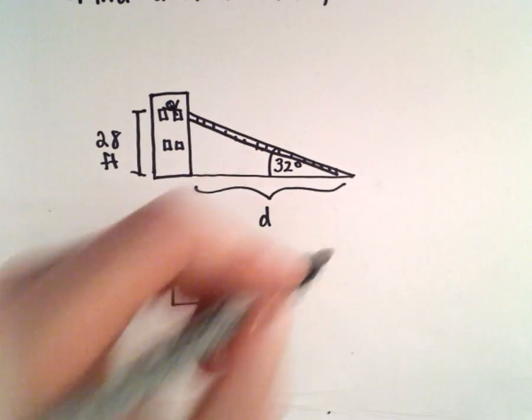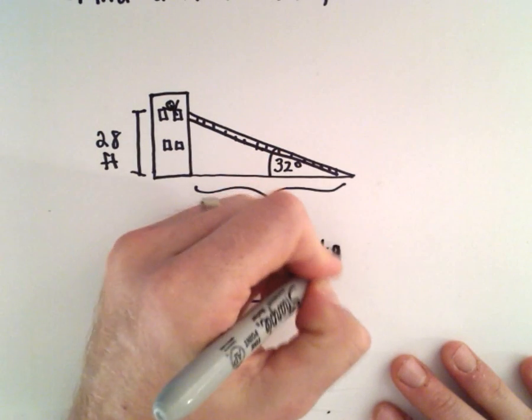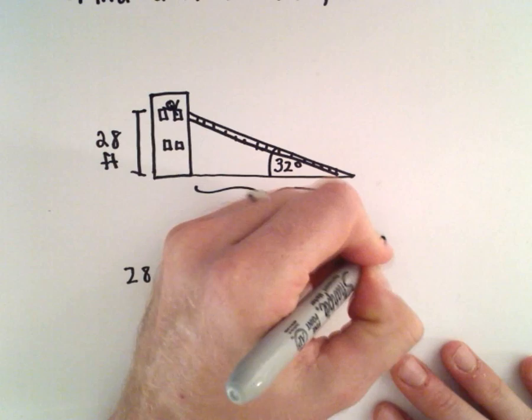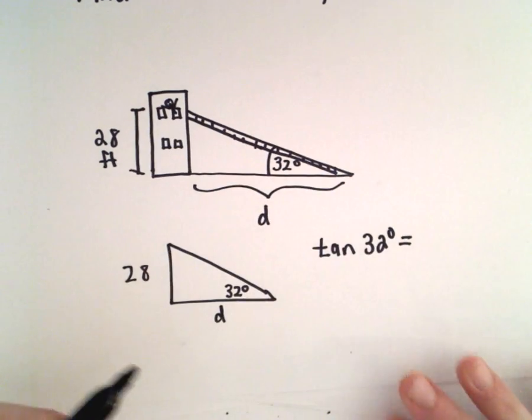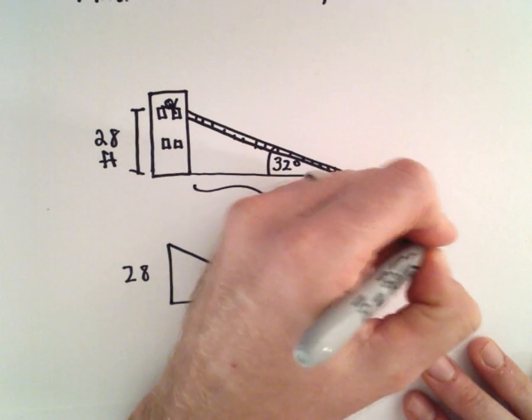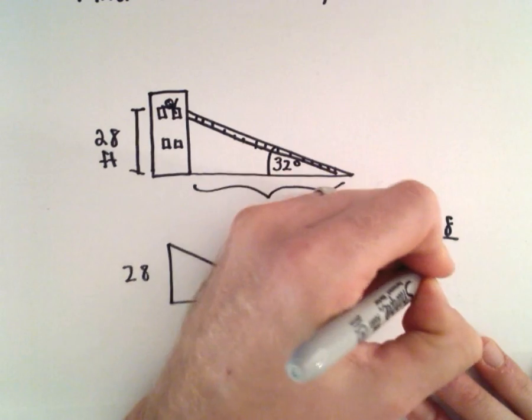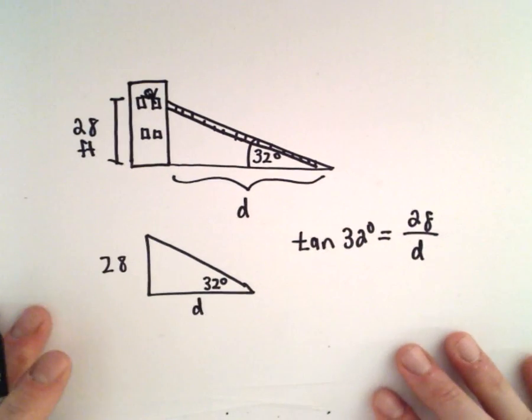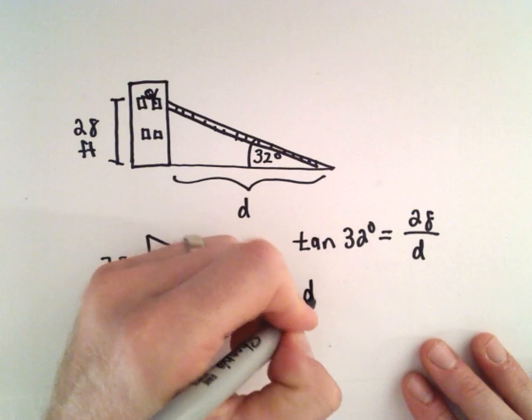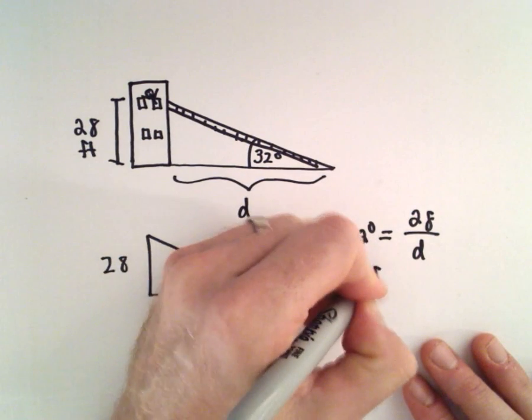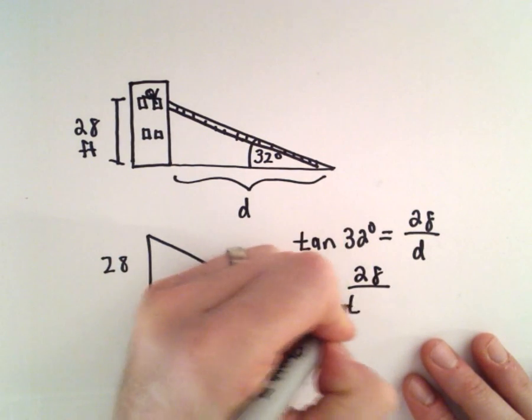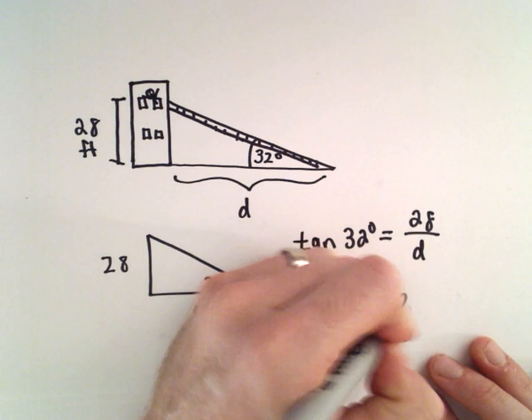So what I'm going to use here is tangent. So tangent of 32 degrees would equal the ratio of the opposite side, which is 28, to the adjacent side, which is D. And then what I'm going to do is multiply by D and then divide by tangent of 32 degrees.